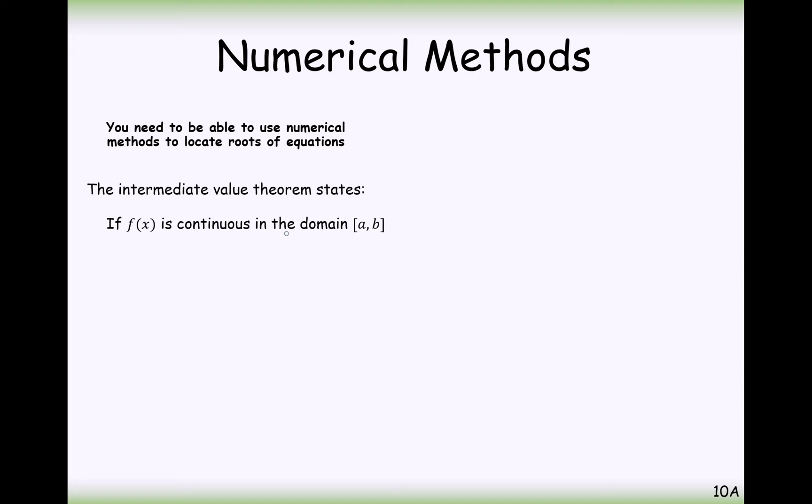In the domain brackets A to B, what this means is that X is in between two numbers. It's not like a coordinate, it means that X is in the interval between A and B. So X is a number between A and B, and it's continuous throughout that whole part of the graph. Then we have an upside-down capital A here, this means for all. So then for all D values that exist between F of A and F of B, and this backward capital E symbol means there exists a C inside the interval from A to B, such that D equals F of C.